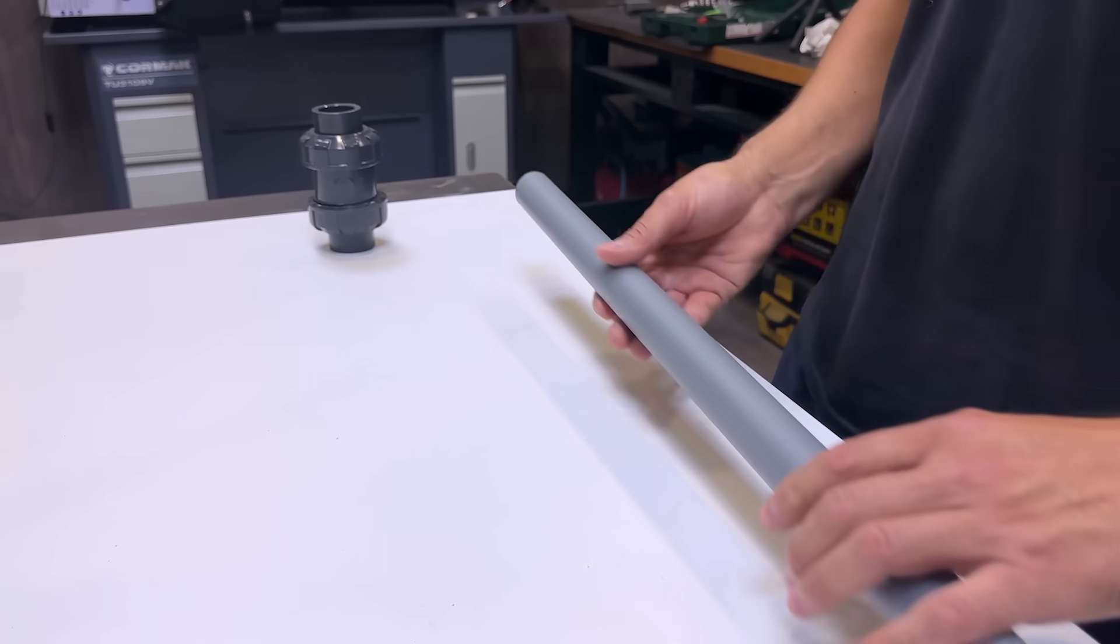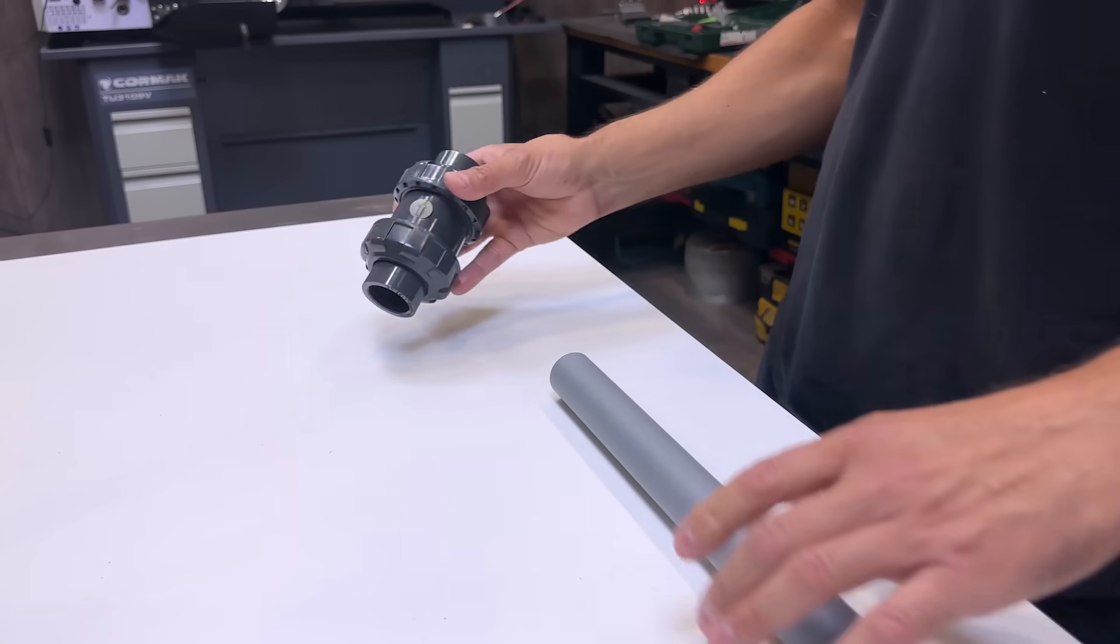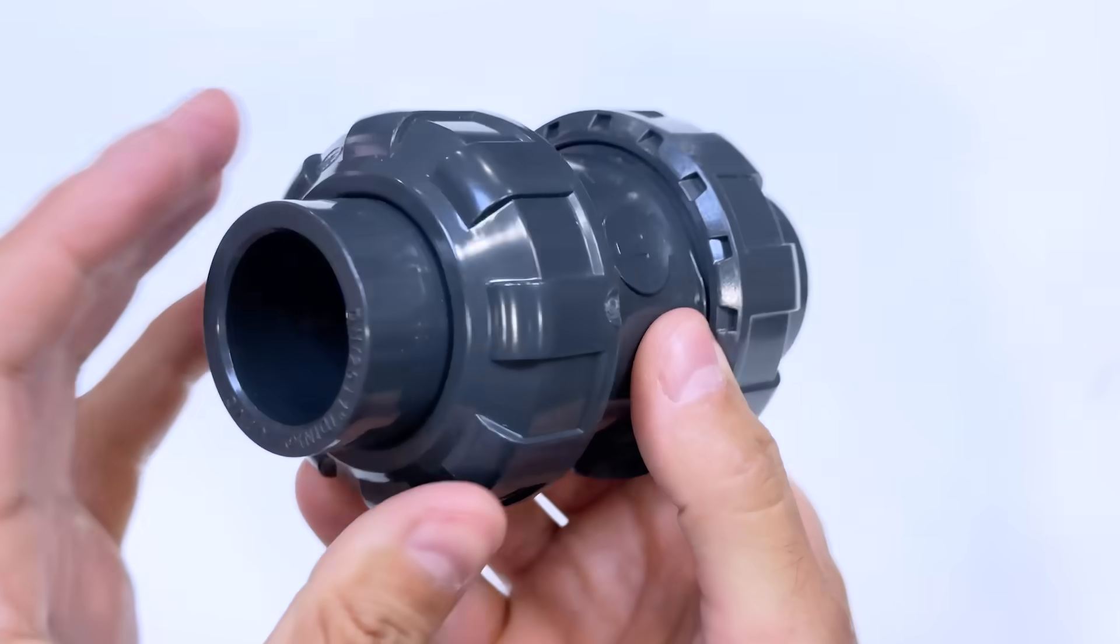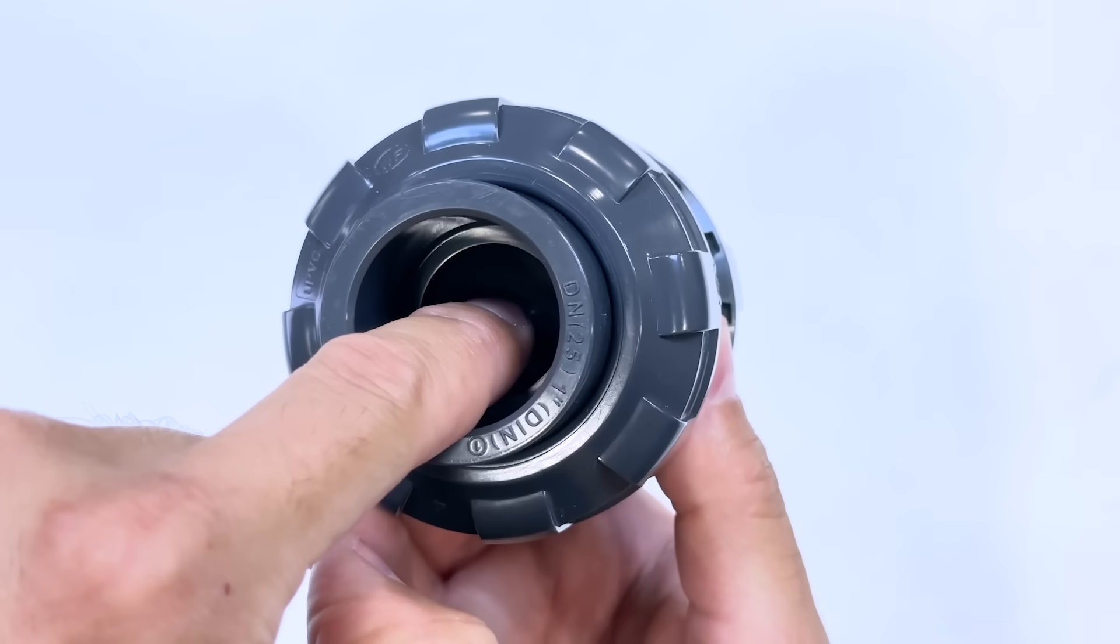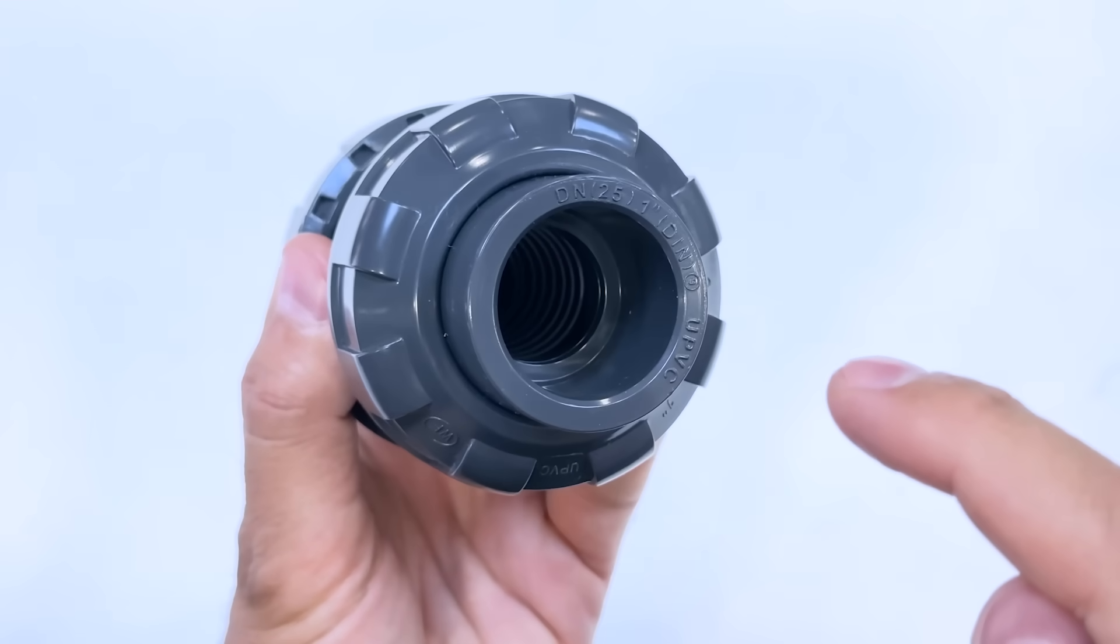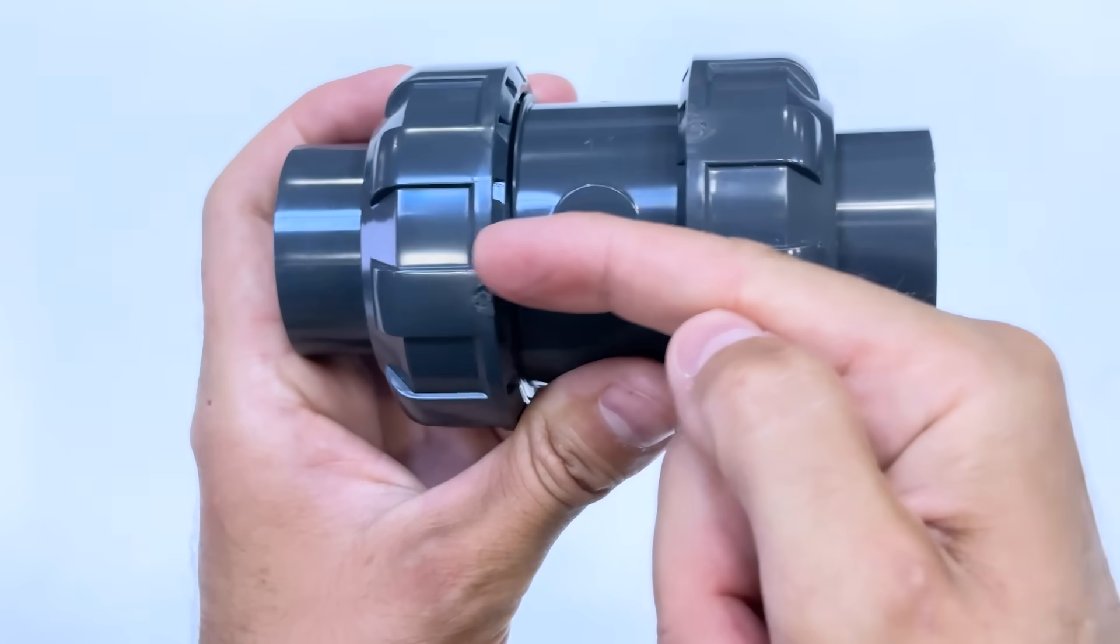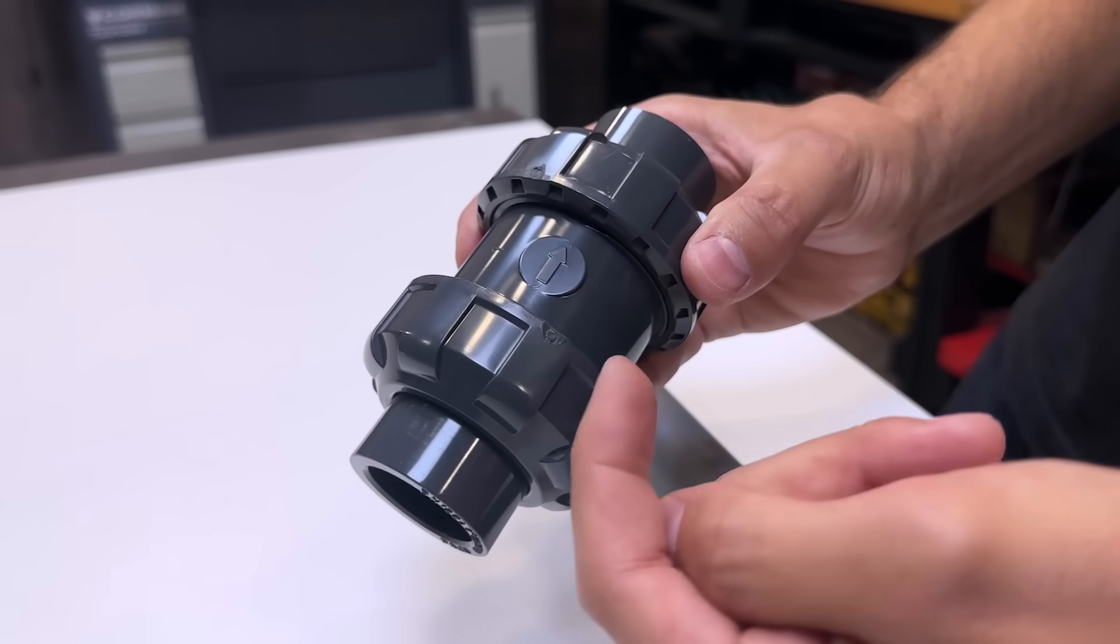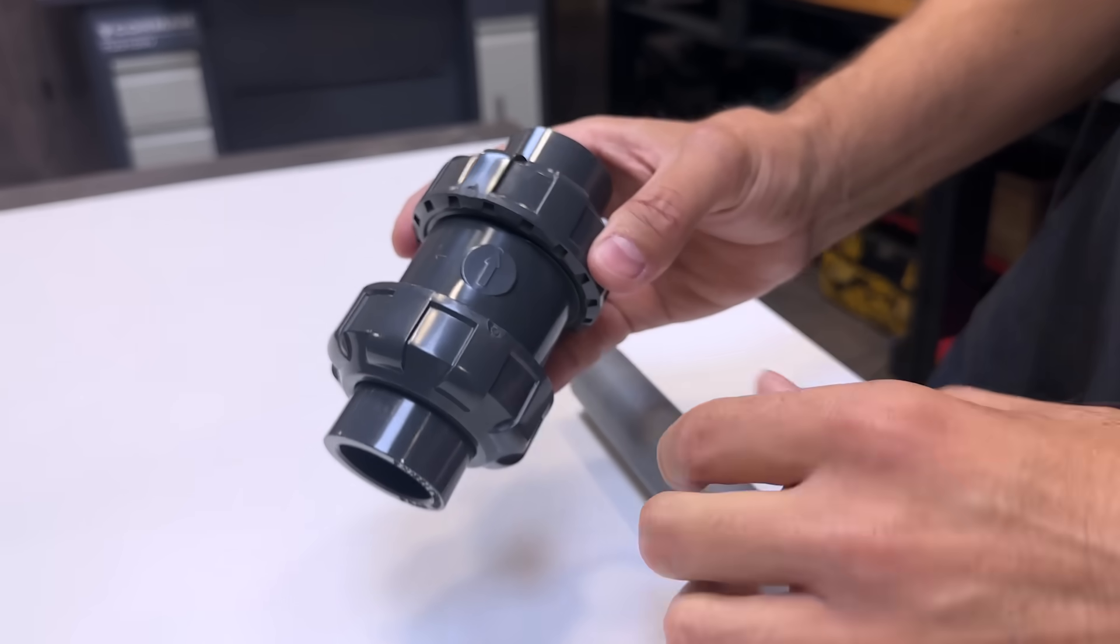This will be our water suction pipe. We need to add a non-return valve. This ball is spring-loaded. In the direction of water flow inside this valve, the ball yields and allows water to flow. In the opposite direction, the ball will block the water flow. This arrow indicates the direction in which the water will flow.